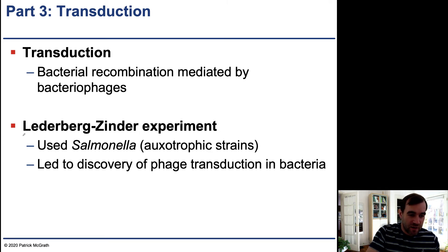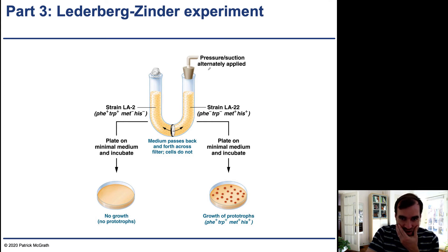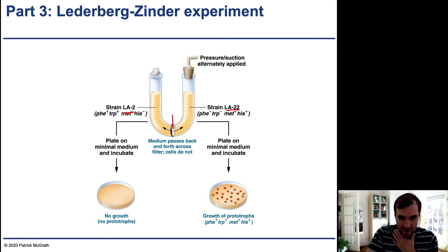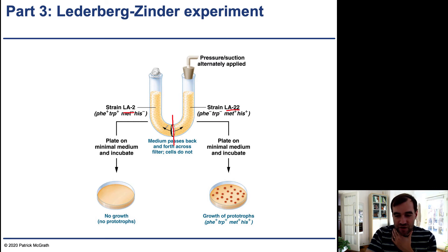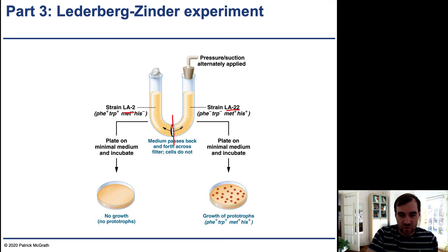The Lederberg-Zinder experiment was used to show that phage could actually transfer genetic material from one bacteria to another. The experiment had two different strains, LA2 and LA22, separated by a filter. Only very small things could pass through — media could transfer back and forth, and the filter was small enough to allow viral particles to pass, but bacterial cells were not able to pass through.